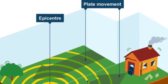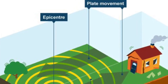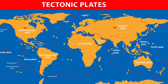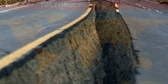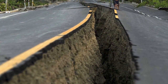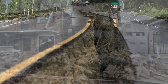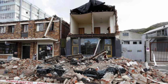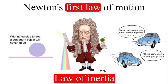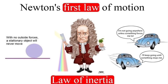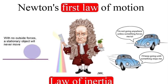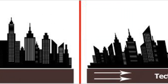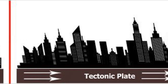An earthquake is the shaking of the earth caused by pieces of the earth's upper crust called tectonic plates suddenly shifting. This shifting of tectonic plates causes the ground to shake in many directions. When that shaking occurs, structures can potentially get thrown from side to side and up and down. We know that Newton's first law of motion states that an object at rest tends to stay at rest. In an earthquake, the buildings want to remain at rest, but the problem is the tectonic plate that they're resting on is moving.